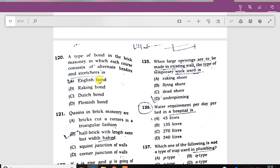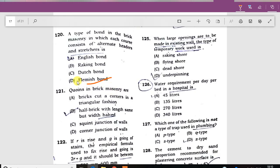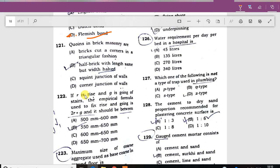A type of bond in brick masonry which consists of alternate header and stretcher is known as Flemish bond. The points of brick masonry is the corner junction of the wall.